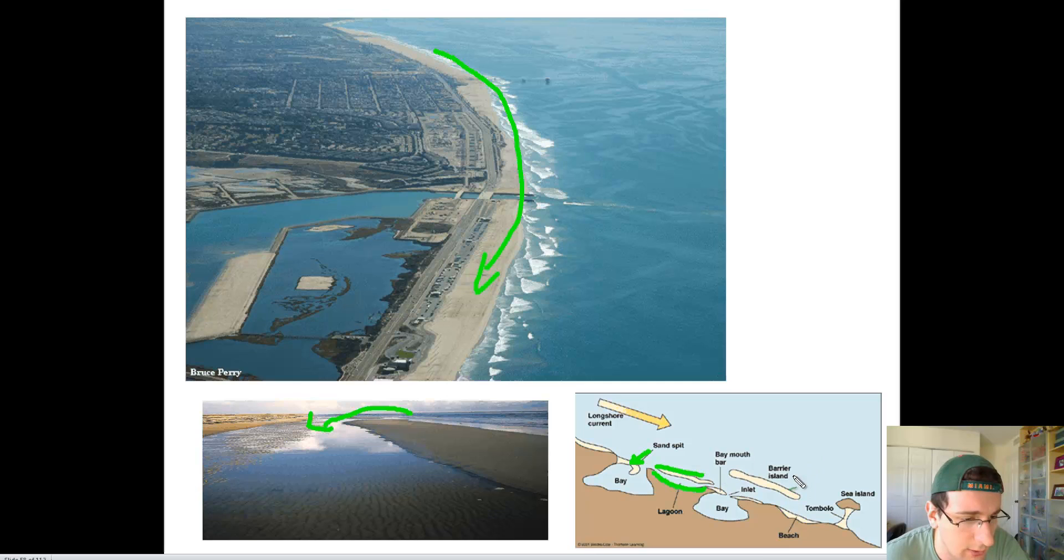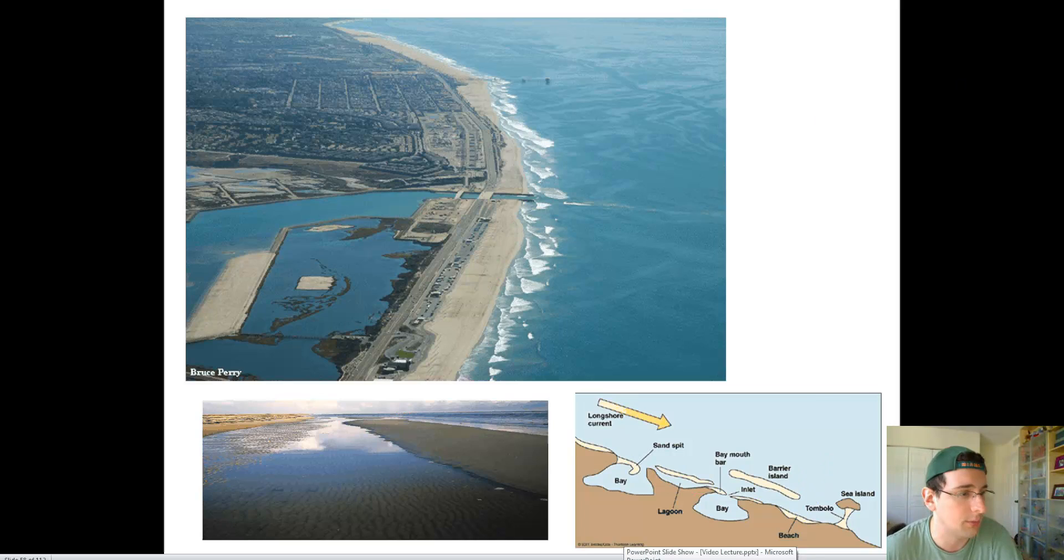Those same longshore currents can also drag and create a new beach far away from the actual original place where the beach sand came from. You can also get the formation of tombolos or connections or bridges of sand between a rock bed and an actual sea island or a barrier island. The same thing could happen here between the barrier island and the rock bed as well. You can see how depositional variations would actually change the surface or the features of the beach.